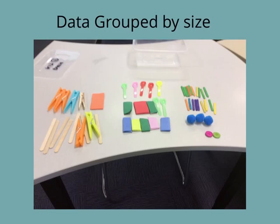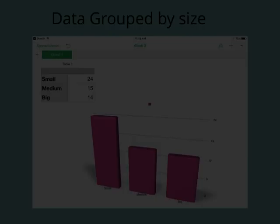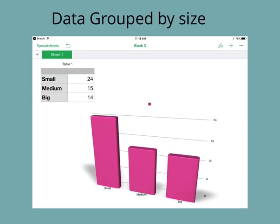This is data grouped by size. We have small, medium and big. This is a chart for data grouped by size. Small is the biggest.